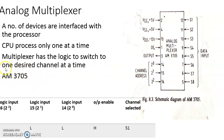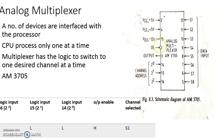The analog multiplexer 3705 is available as a 16-pin IC package. Pin numbers 2 and 4 are the plus 5V supply. Pin number 3 is minus VDD at minus 12V. Pin number 1 is the output enable. Pin number 3 is the output. Pin numbers 16, 15, and 14 are the channel selection address lines.